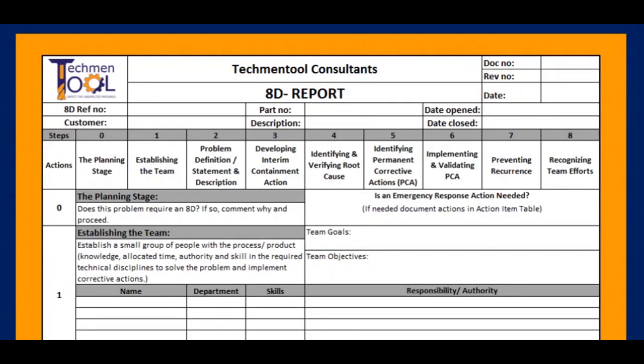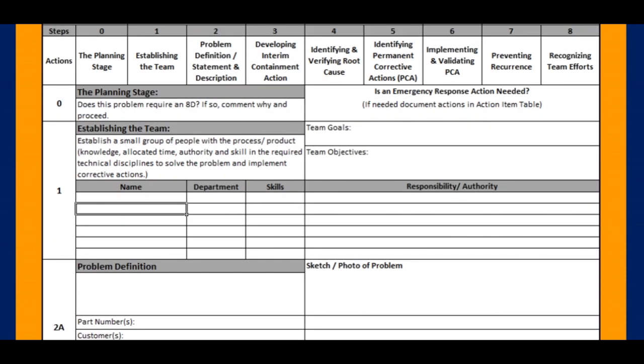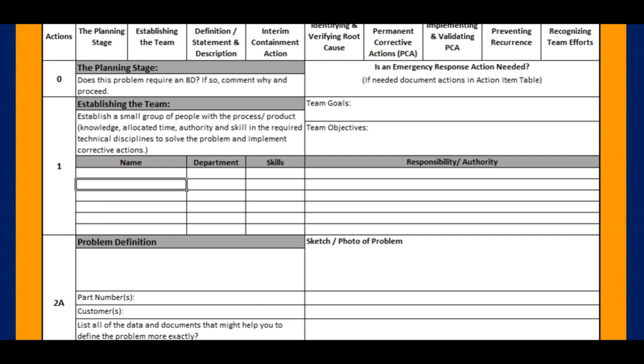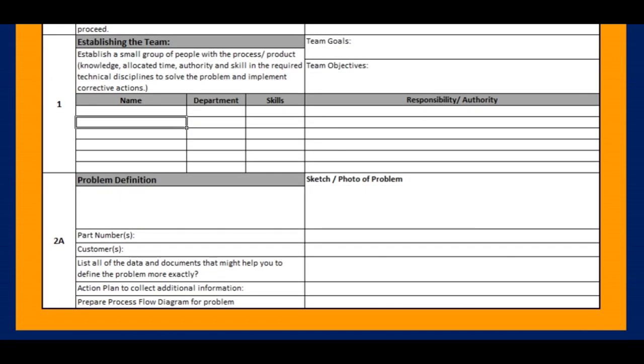This is the format for preparation of an 8D report. As discussed, it consists of 8 different actions: Planning, Team formation, Problem statement, Containment action plan, Verifying root cause, Corrective action, Corrective action implementation, Preventive action, and Team recognition. Each action is to be analyzed separately to arrive at a solution and close the report.